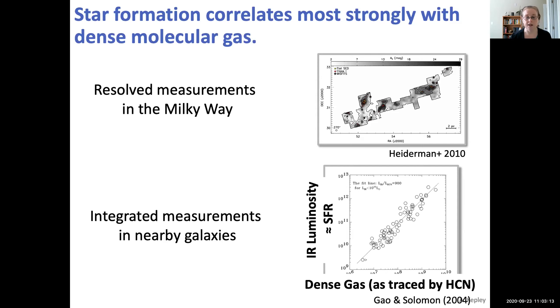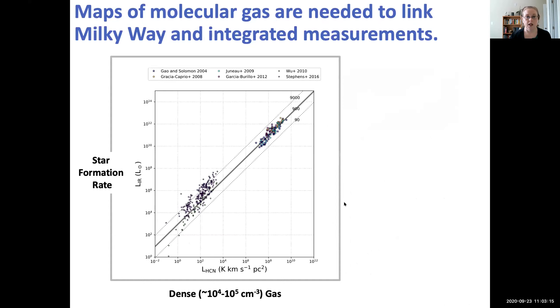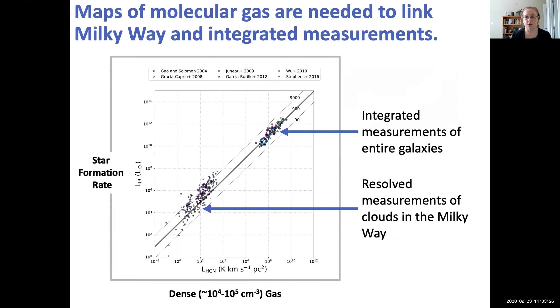But what we'd like to do ultimately is connect these resolved measurements of clouds in the Milky Way, which after all is one single galaxy, with integrated measurements of entire galaxies, which represent more of the population of galaxy properties we see. And to do this, we need to fill in the gap by mapping molecular gas in nearby galaxies.